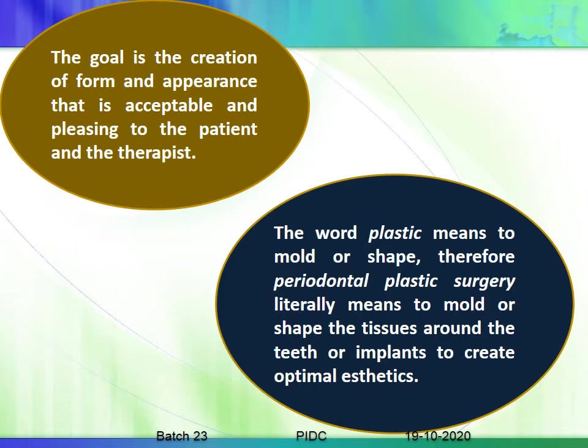The goal of periodontal plastic surgical procedures is the creation of form and appearance that is acceptable and pleasing to both the patient and the therapist. The word 'plastic' means to mold or shape; therefore, periodontal plastic surgery literally means to mold or shape the tissues around the teeth or implants to create optimal aesthetics — and not only aesthetics, it also helps in function.